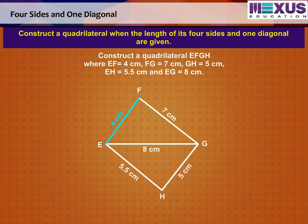where EF is equal to 4 cm, FG is equal to 7 cm, GH 5 cm, EH 5.5 cm, and EG is equal to 8 cm. Let us draw the quadrilateral step by step.